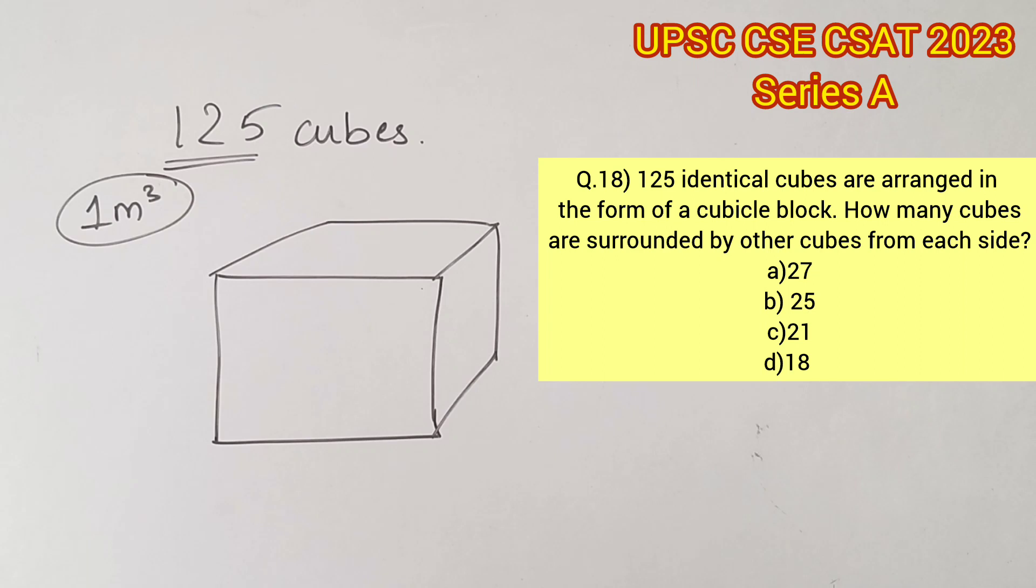Now this means when 125 cubes are arranged in the form of a cube, the bigger cube will have a volume of 125. We know that volume is nothing but side cubed, considering a as the side.